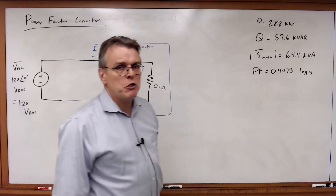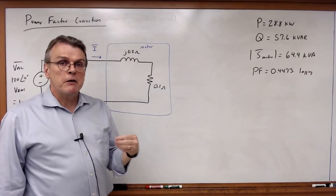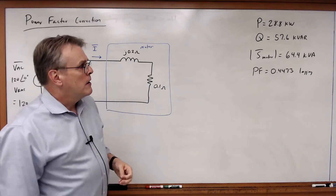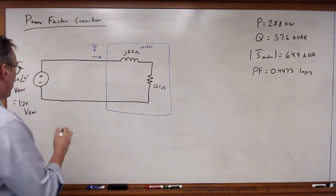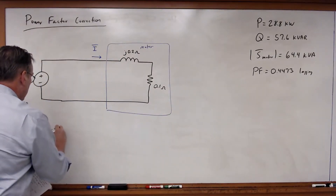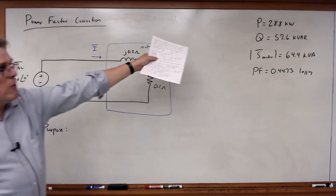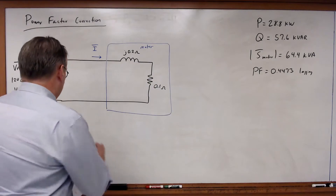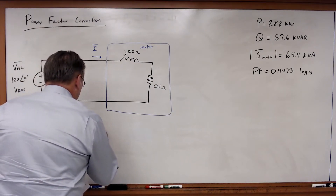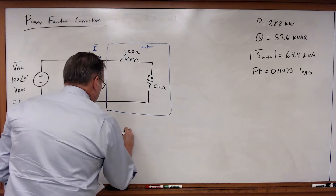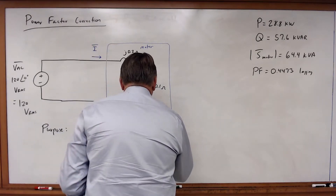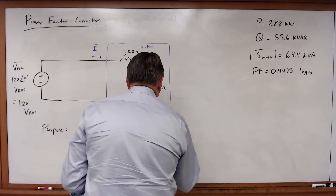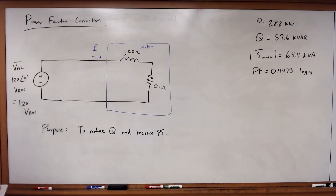In other words, you have too much Q, too much reactive power, because they need to make their generators bigger to supply that reactive power. The answer is power factor correction. The purpose of power factor correction is to lower the Q of your load and thereby to increase the power factor. It turns out it's a pretty simple process requiring one additional component.